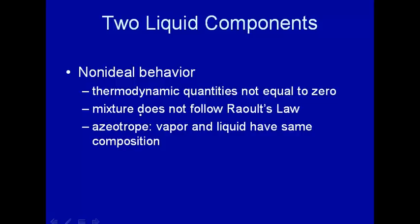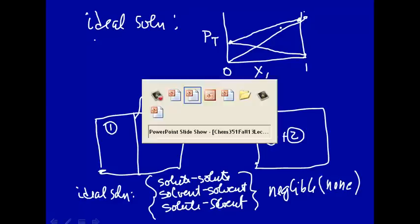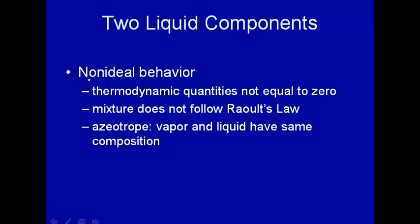And then, another definition of our ideal behavior for two liquid components was that the total pressure follows Raoult's Law. Raoult's Law, recall, was this. So if you don't get straight lines, if you plot total pressure versus mole fraction of one of the components, and it's not linear, well, what does that mean? That means it's non-ideal, non-ideal behavior. So the mixture does not follow Raoult's Law.